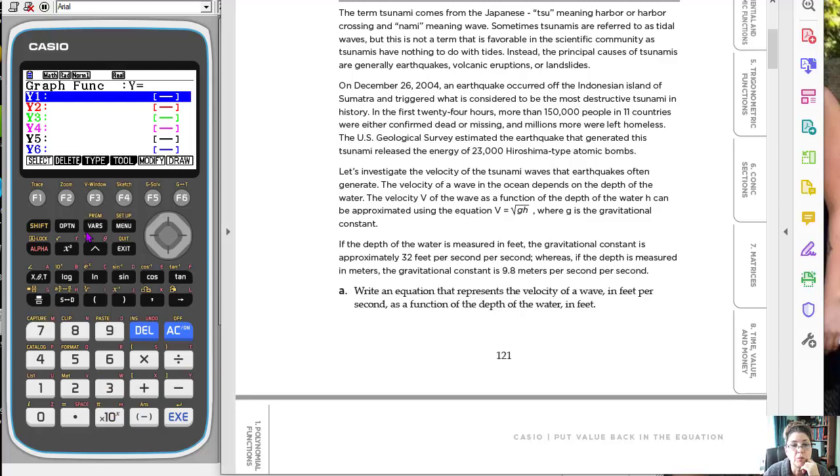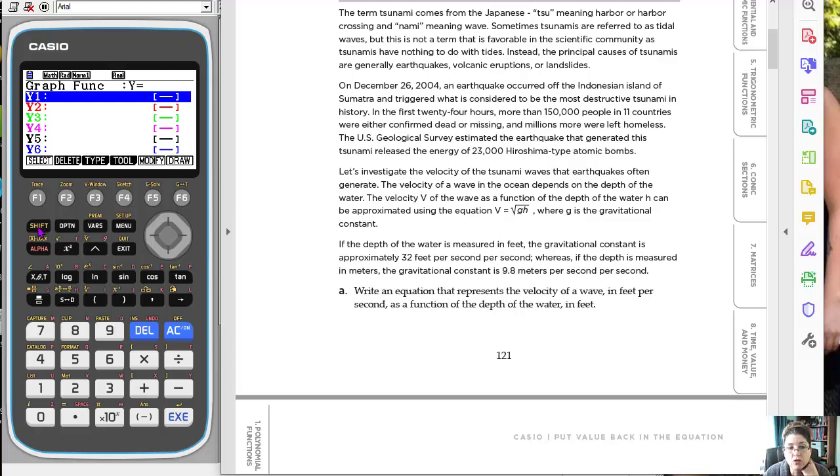So y equals, and they're giving me the gravitational, but they're not giving me h. So my equation would be the square root. So I want to use, if you look over here, here's x squared, its inverse, the square root is right here. So I need to use shift and that gets the square root symbol in there. So 32 x, right? So that's the equation.